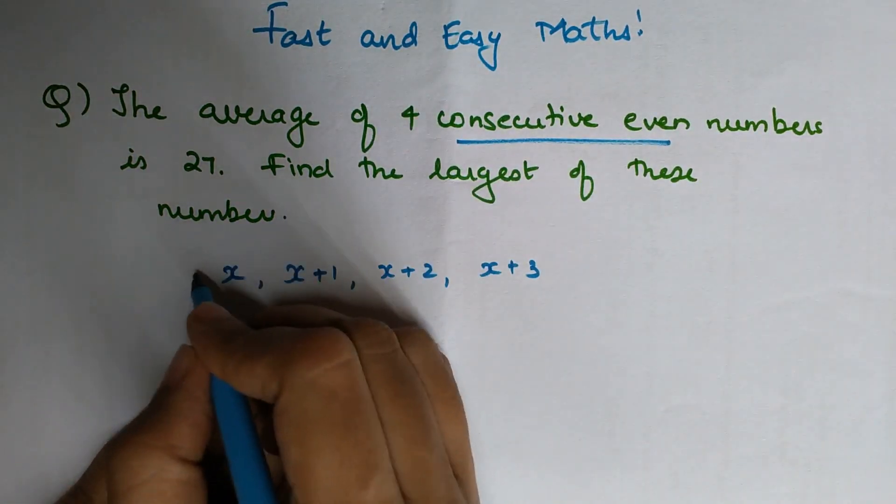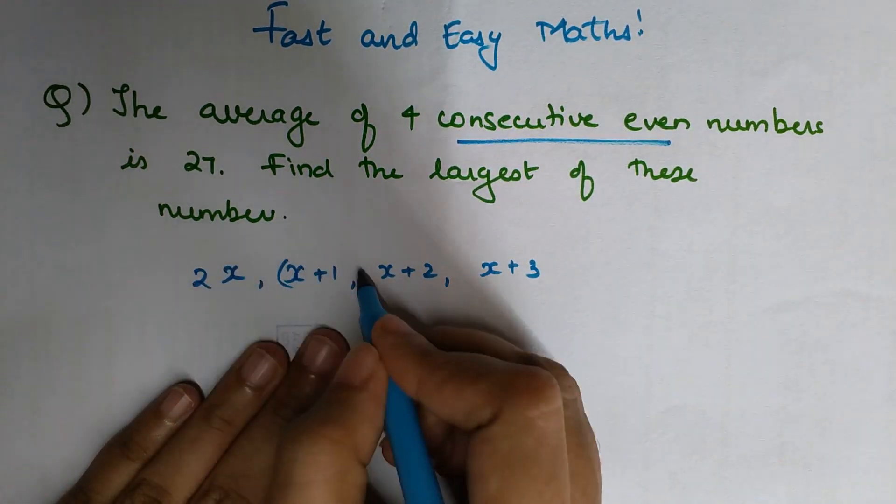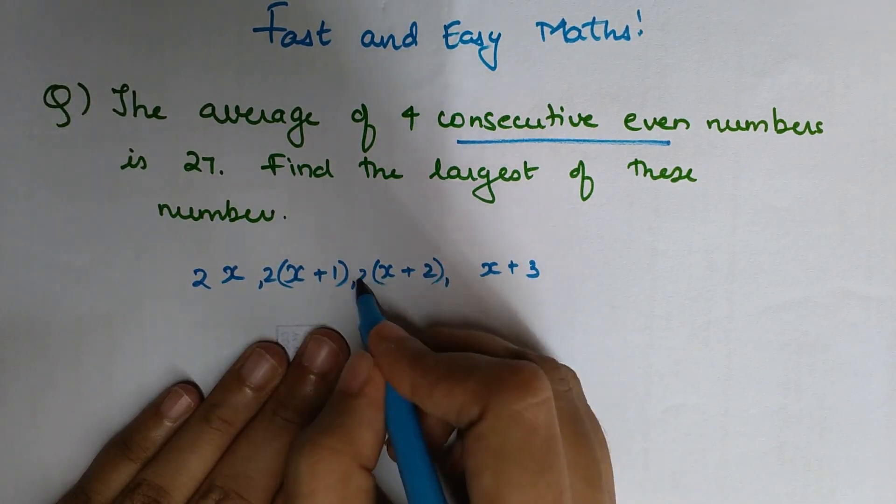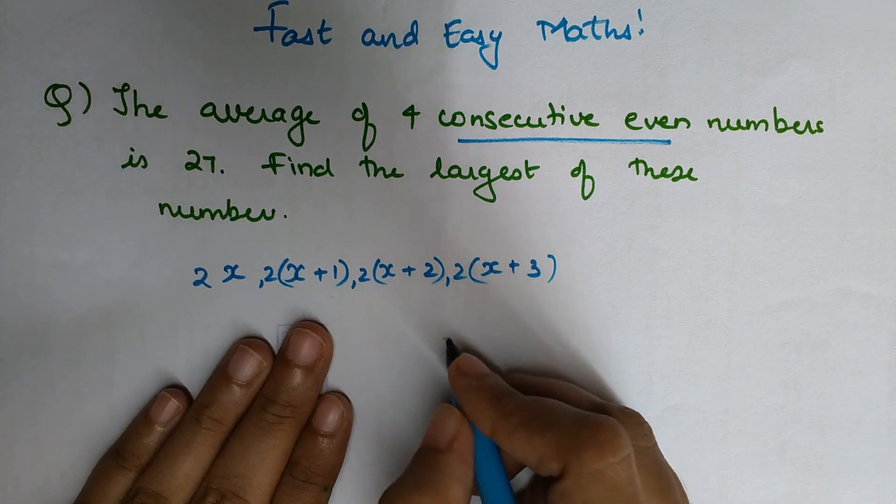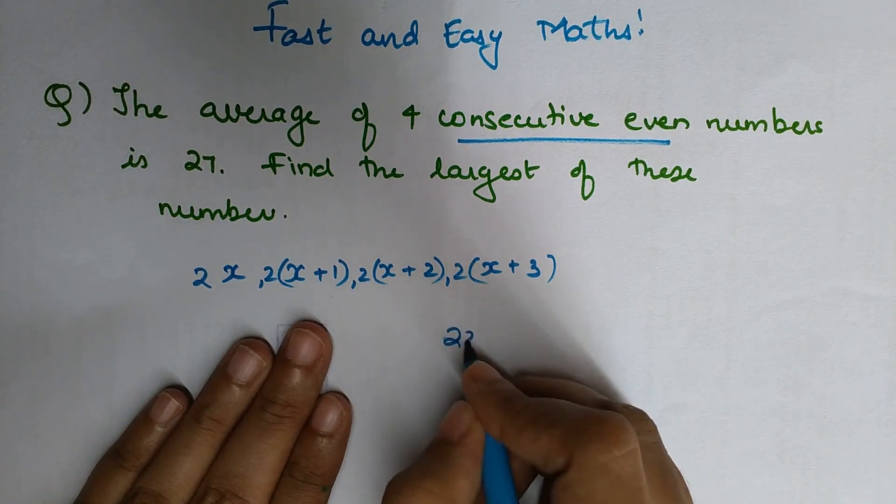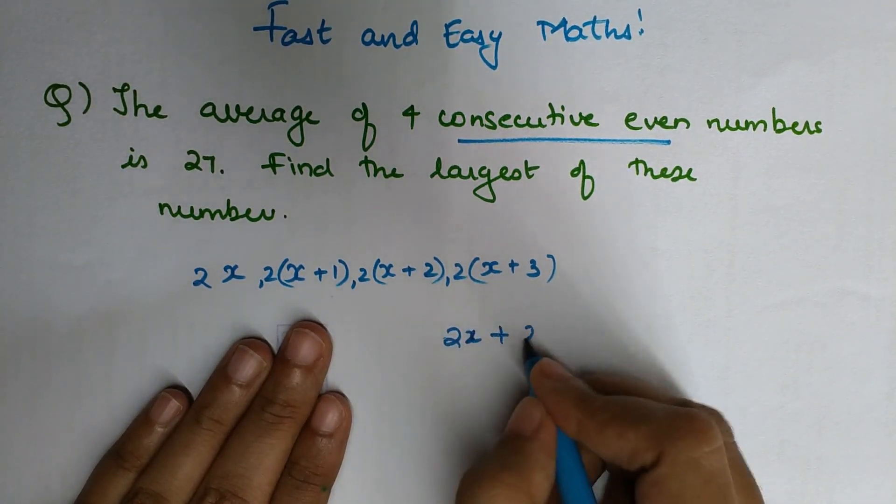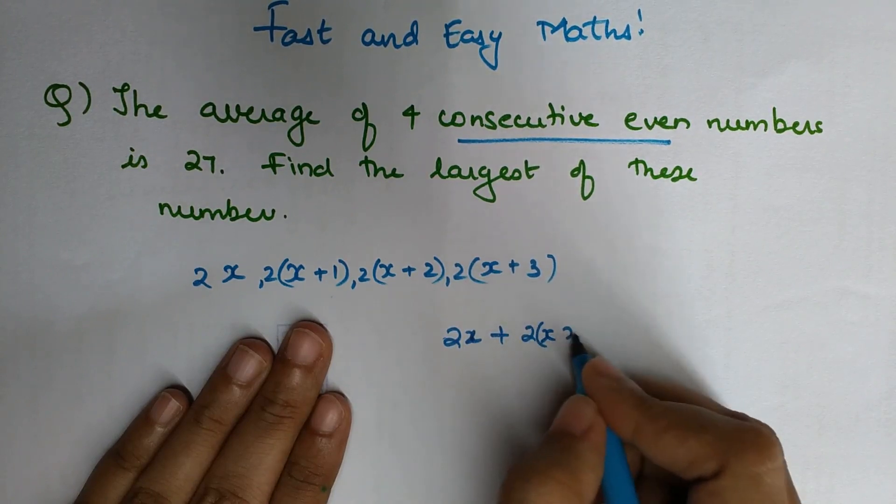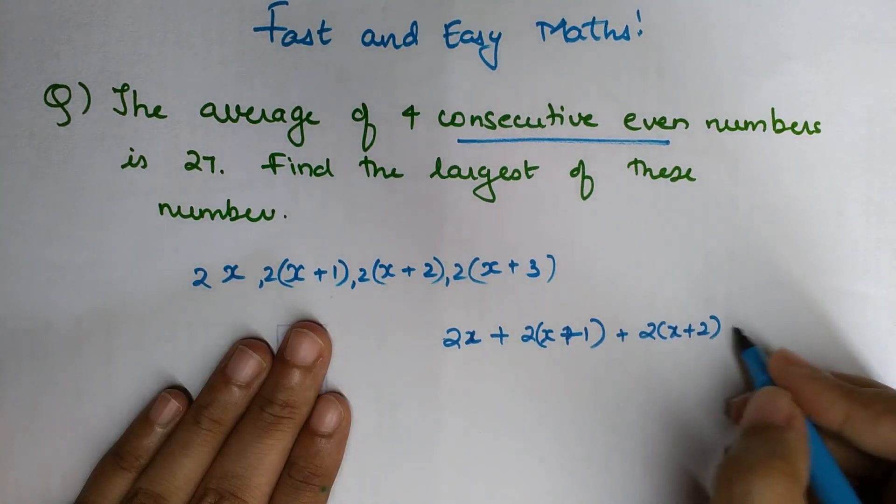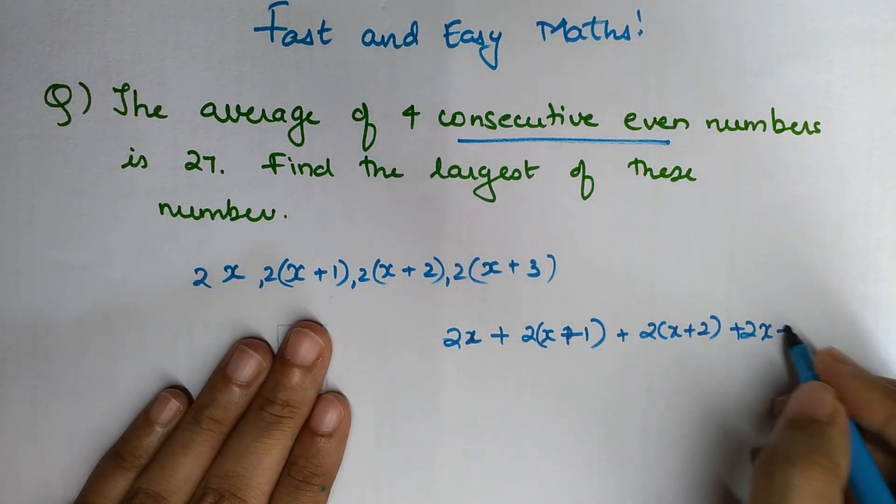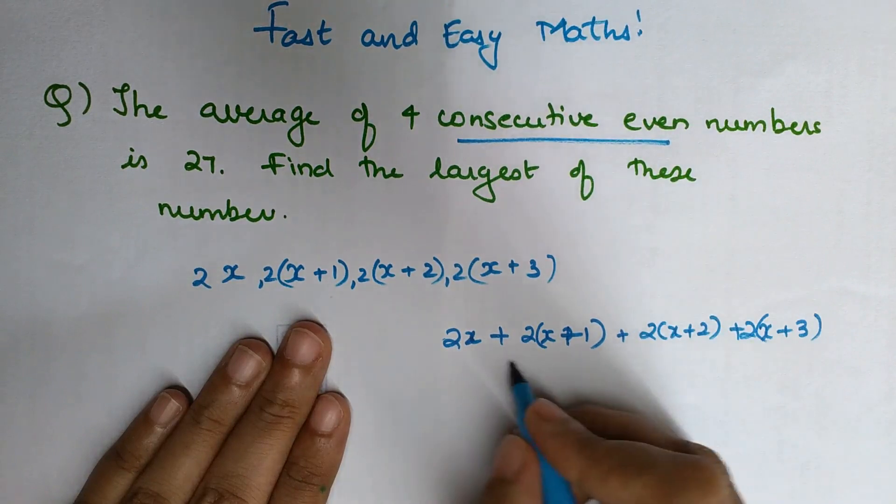...you will multiply each of them by 2. So basically, now I can say that my numbers are 2x, plus 2(x+1), plus 2(x+2), plus 2(x+3).